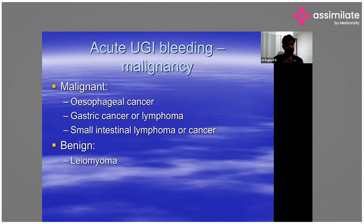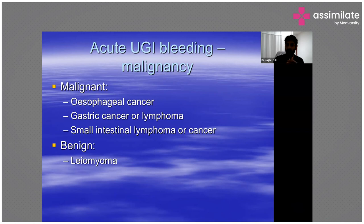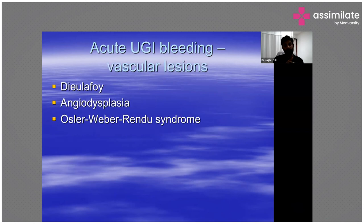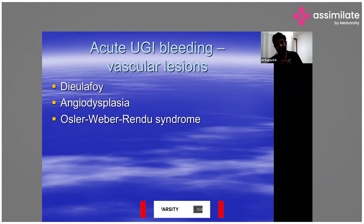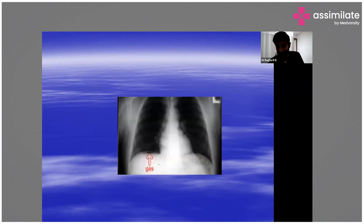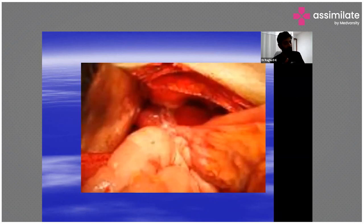Other causes of upper gastrointestinal bleeding include malignancy — esophageal cancer, gastric cancer, lymphoma, small intestinal lymphoma or cancer. Benign causes include leiomyoma and Dieulafoy's lesion, an aberrant blood vessel that becomes superficial and presents with massive GI bleeding. Angiodysplasia or AV malformation is common in the elderly, renal patients, patients with aortic stenosis, or CLD patients. Osler-Weber-Rendu syndrome with telangiectasias is also seen in these patients.